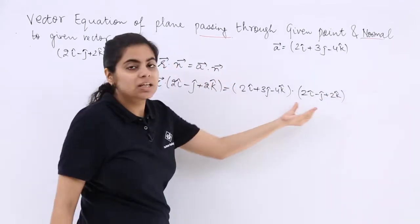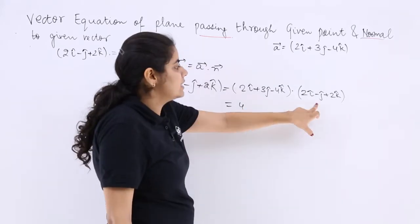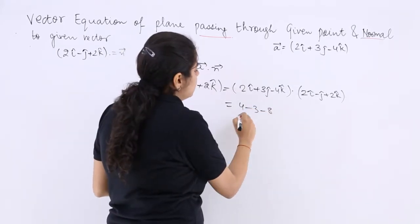Now just have the dot product. So it is 4, right? Then it is minus 3, then it is minus 8.